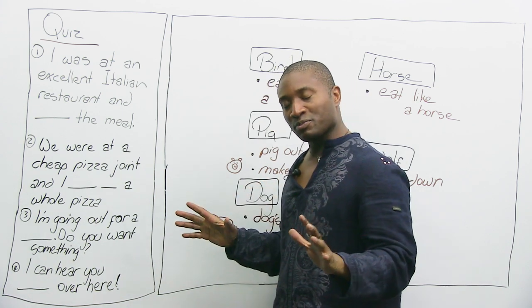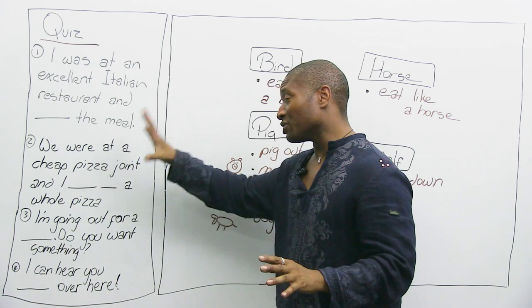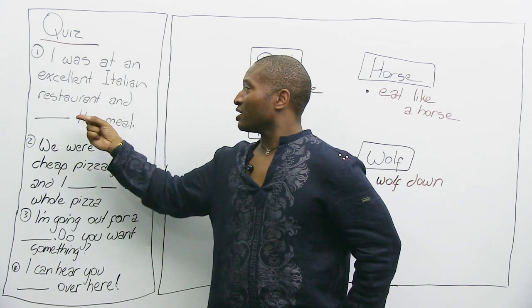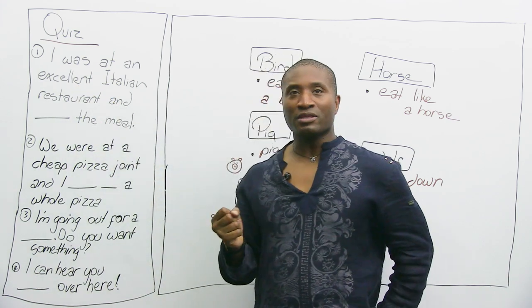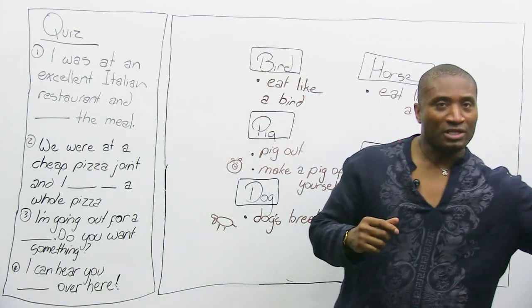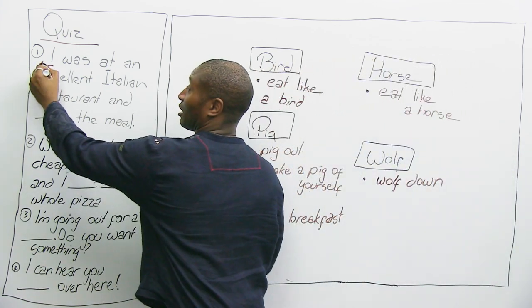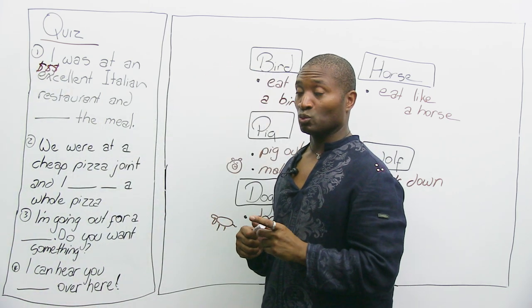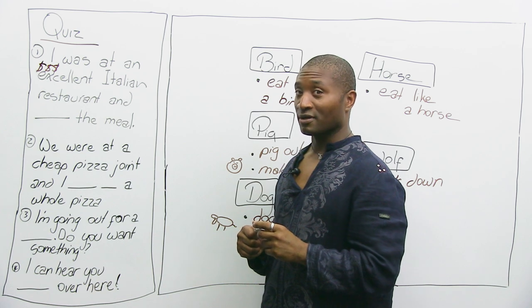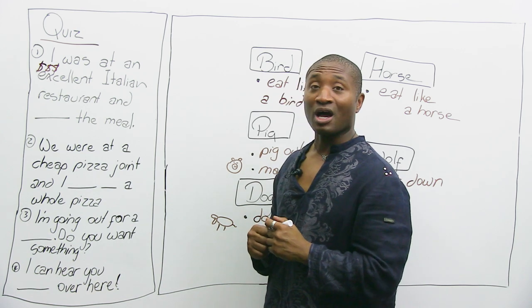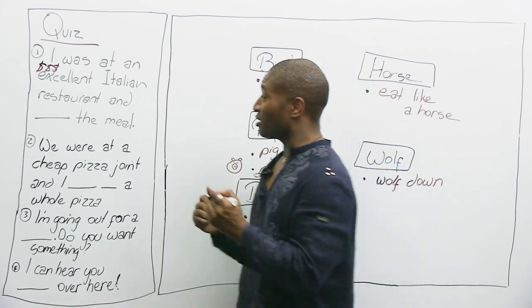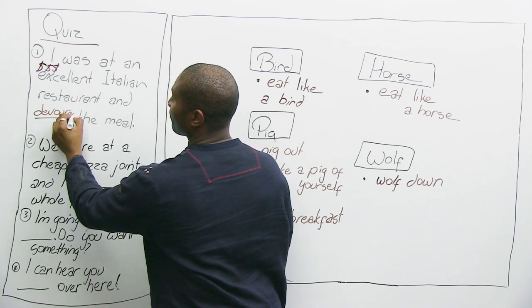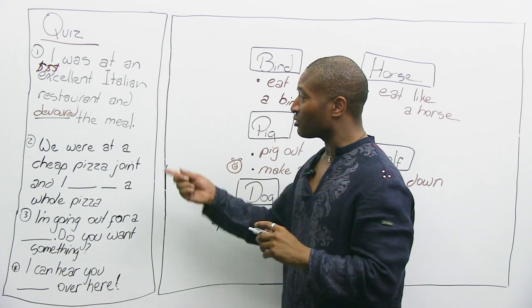How about a quiz? Because you know we have a big quiz, but I want you to do this quiz first and see what you've learned. All right? So the first one we want to do is this. I was at an excellent Italian restaurant, and I something'd the meal. Did I mention excellent also means expensive? Hopefully that helps you. That's right. That's right. You got it. I devoured. Devoured it. Yeah. Devoured the meal.